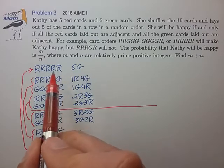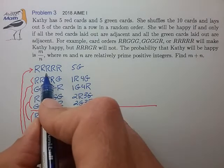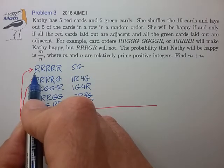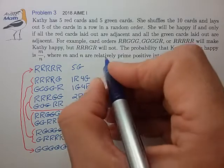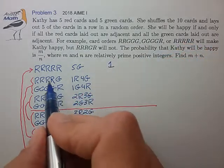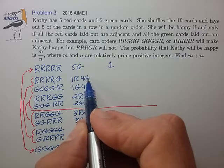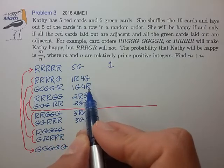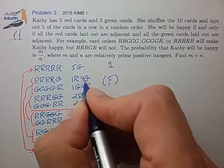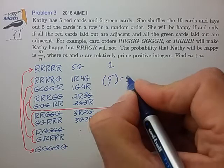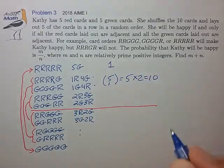So let's count: how many ways can we achieve the configurations listed? For the first one, there's only one way to achieve the 10 cards with 5 reds to the left and 5 greens to the right. For the configurations with 1 red and 4 green, or conversely 1 green and 4 red, there are 5 choose 1 ways, which is 5. But we have 2 of these cases, so 10 in total.